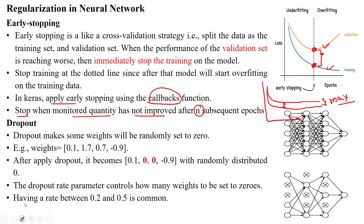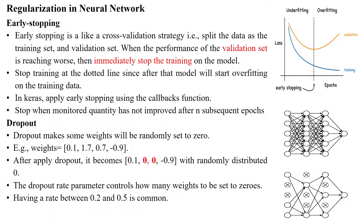Another regularization approach is dropout. Dropout randomly sets some weights to zero. For example, consider this neural network — this is a dense network, meaning all neurons are connected to all neurons in the next layer. Each neuron has a connection to all neurons in the next layer.